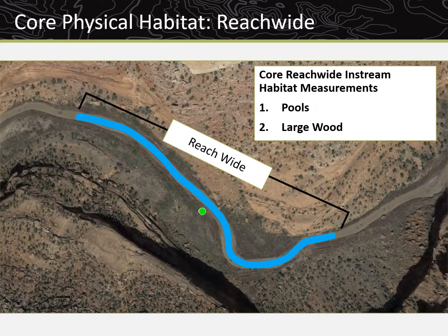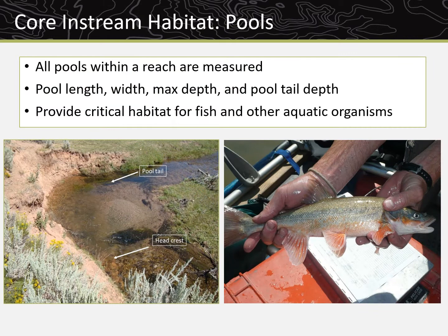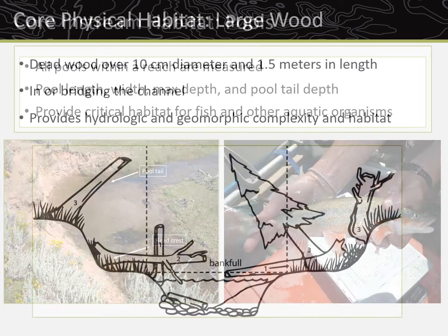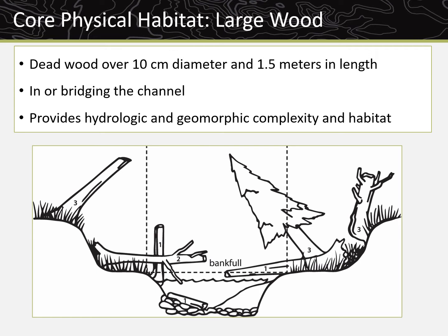Two core PHAB methods are implemented throughout the reach: pools and large wood. All pools within the reach are measured — pool length, width, max depth, and pool tail depth are measured for each pool. Pools are important because they provide critical habitat and refuge for fish and other aquatic organisms, especially in drought years where water levels can be low. Large wood over 10 centimeters in diameter for at least 1.5 meters in length is counted and recorded. Any large dead wood within bankfull or bridging bankfull qualifies and is counted. In-stream large wood creates hydrologic and geomorphic complexity and habitat for aquatic organisms.